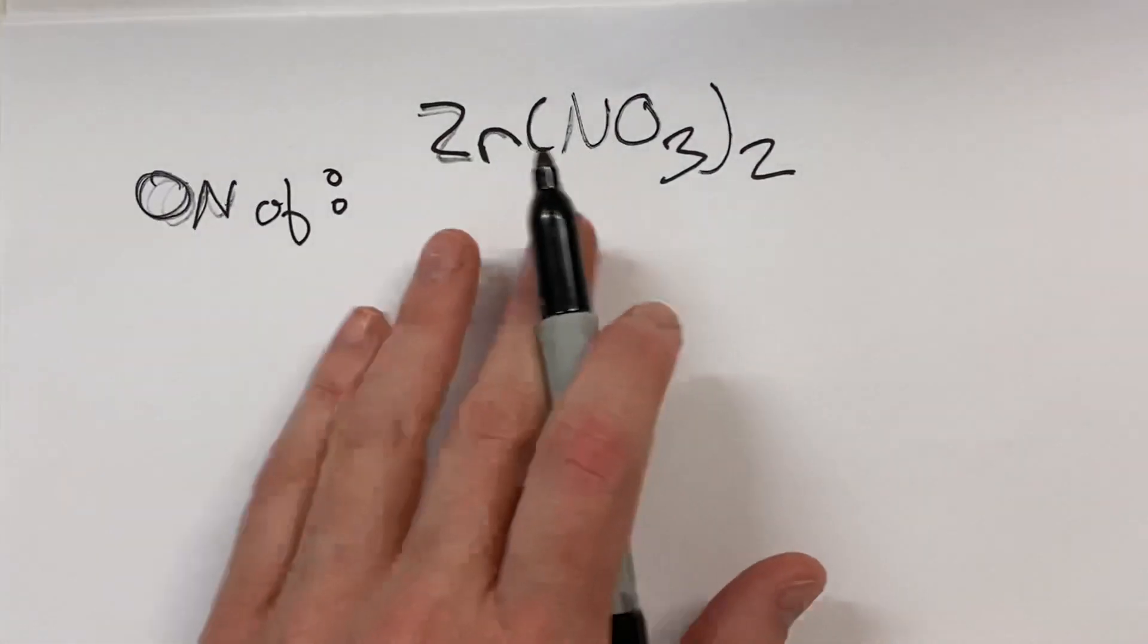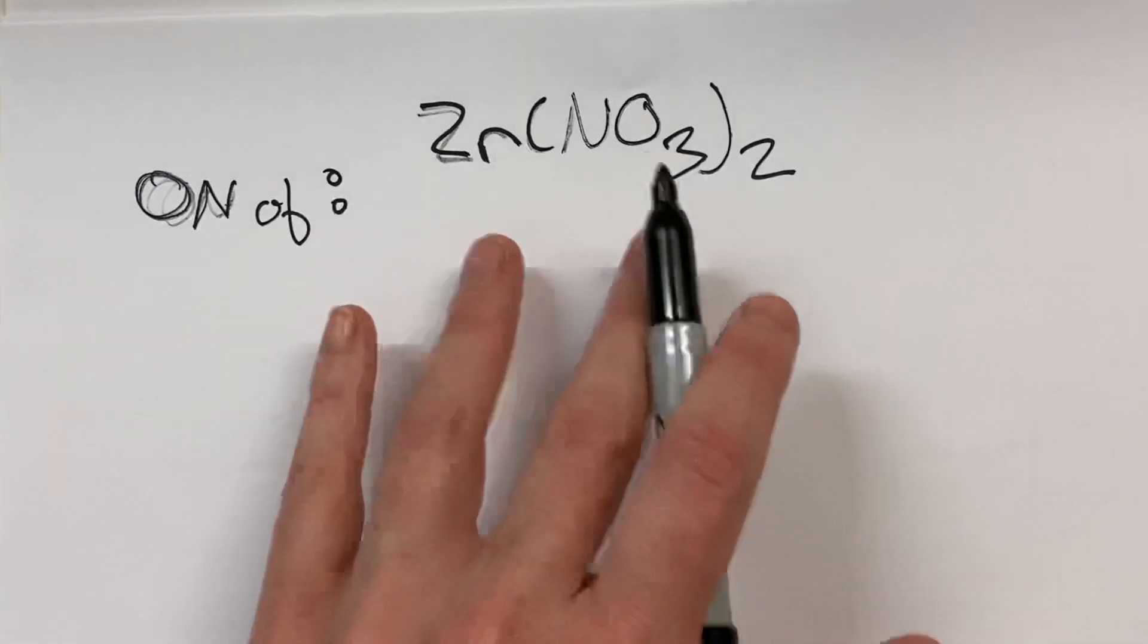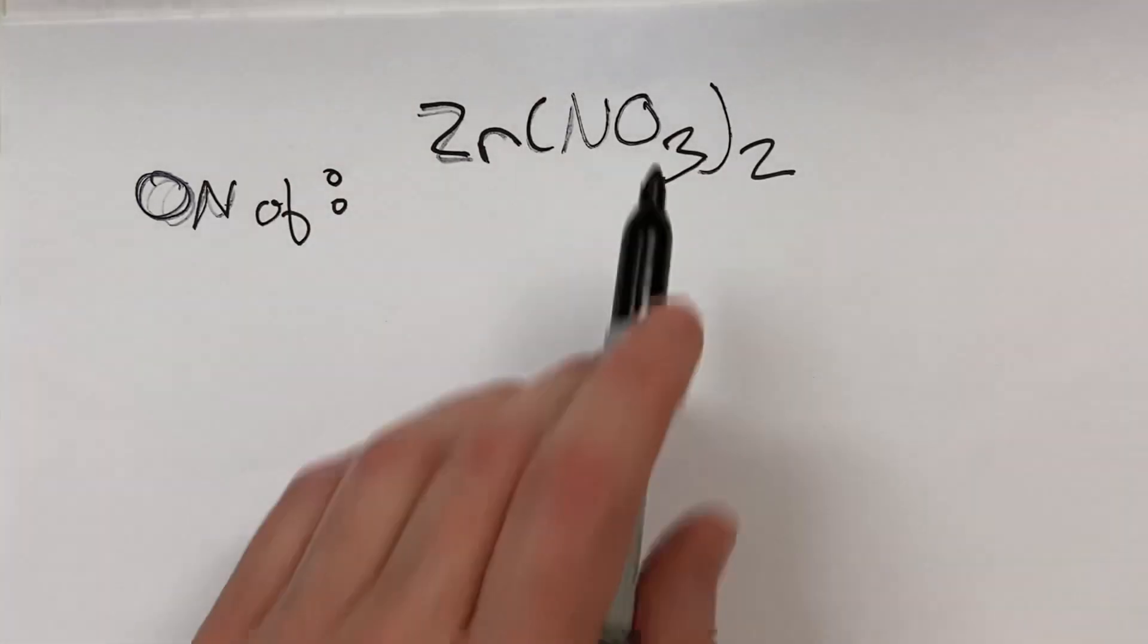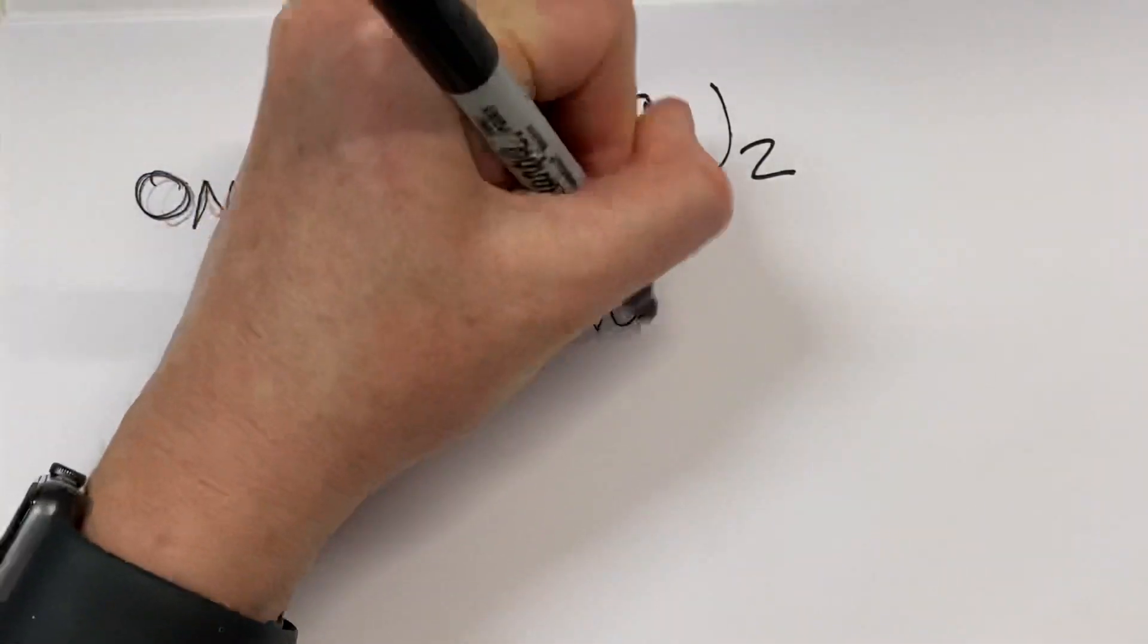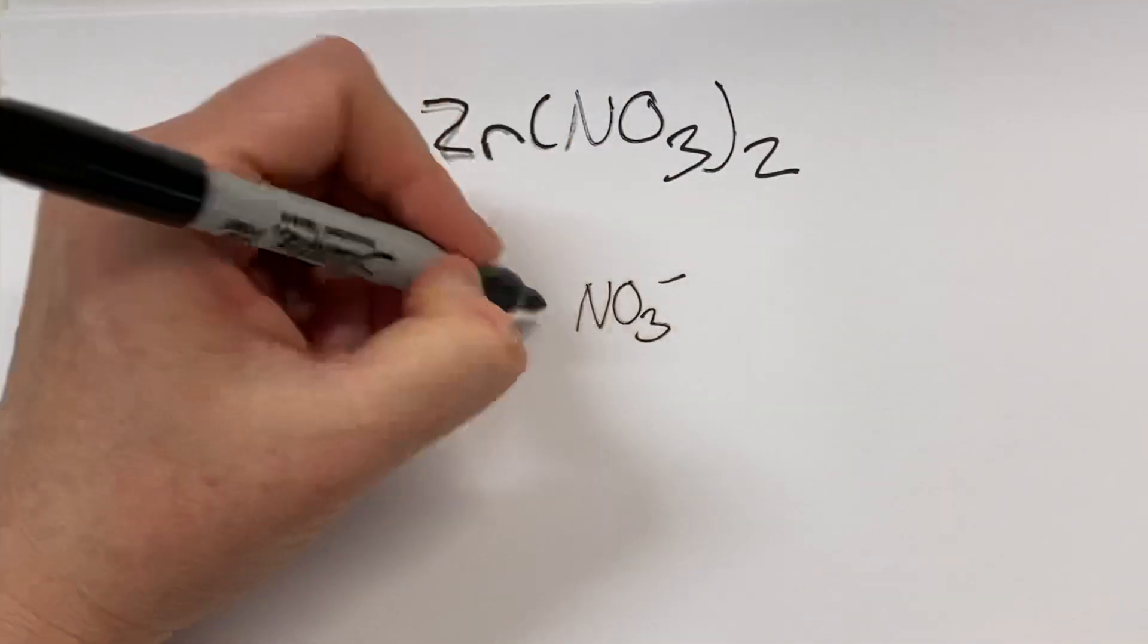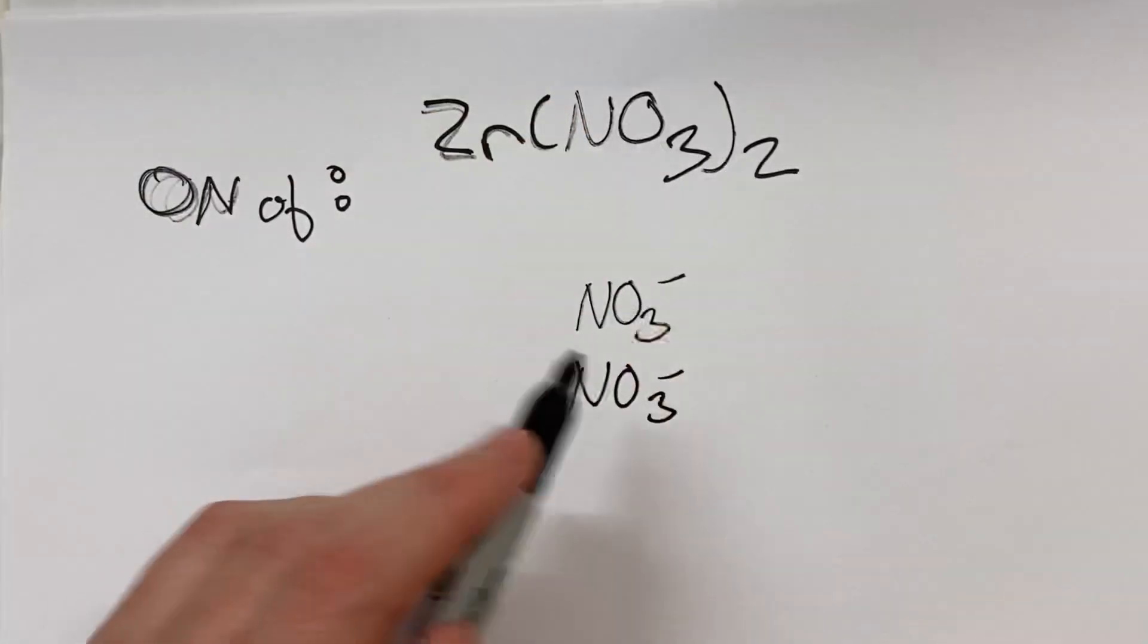I would name this zirconium(II) nitrate, but we kind of have to go back to nomenclature rules as to why that is. Because each nitrate is NO3 negative, and there's two of them, right? That's what this little 2 outside the parentheses tells us.